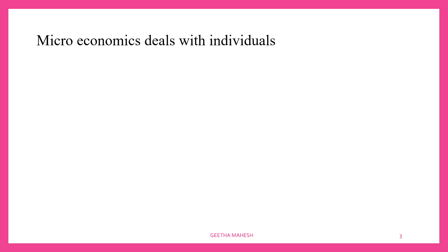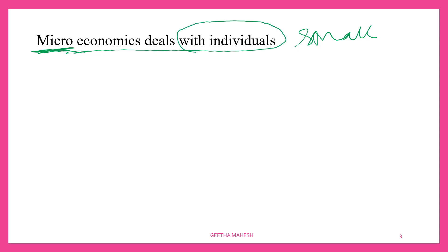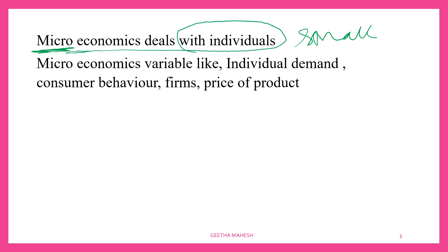Dear students, let us understand what is microeconomics. Micro and macro are derived from a Greek word. Micro means small, so it deals with a small part of the economy — that means it deals with individuals. Variables like individual demand, consumer behavior, firms, price of the product, etc. will be discussed under microeconomics.